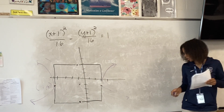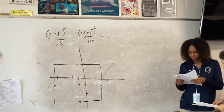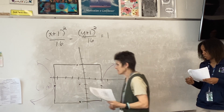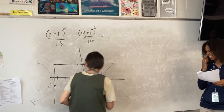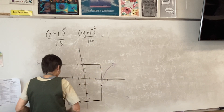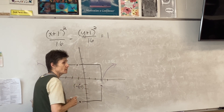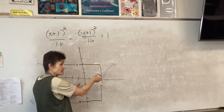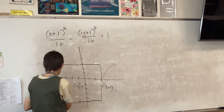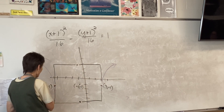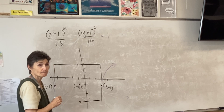What are those points? Our center was at negative one, negative one. Going forward four, we'll be at three, negative one. And going back, negative five, negative one. How does that look? Those are your vertices.